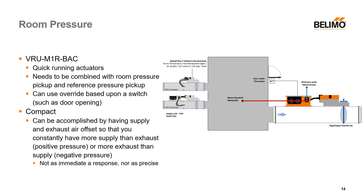There are other ways to do room pressurization using our products. One example is using the compact line — you need both supply and exhaust air controlled using either VAV or CAV, and the idea is that you maintain a constant ratio where either supply is more than exhaust (giving positive pressure) or exhaust is always greater than supply (giving negative pressure). It's not as immediate a response, nor as precise, but it remains an option if you're looking to do something a bit more simply.